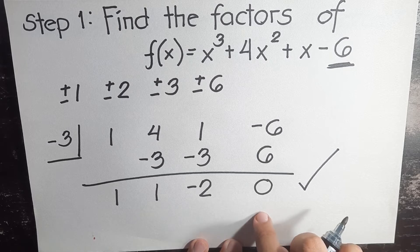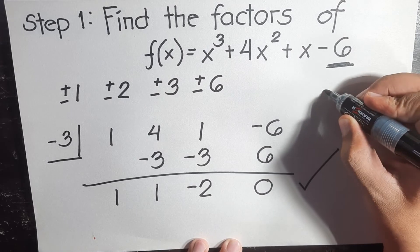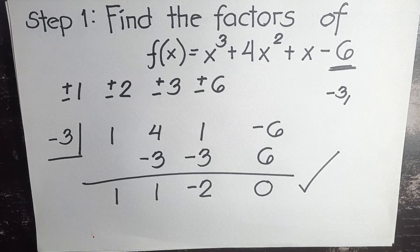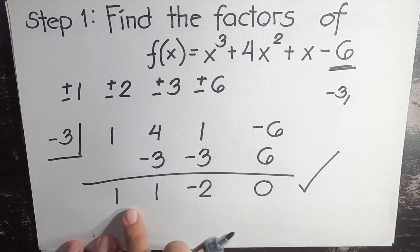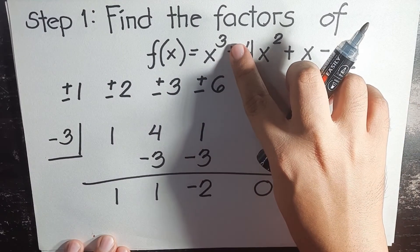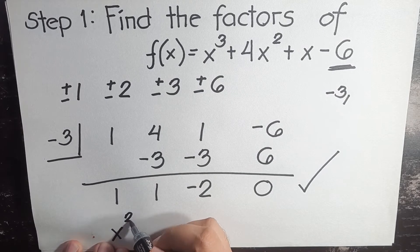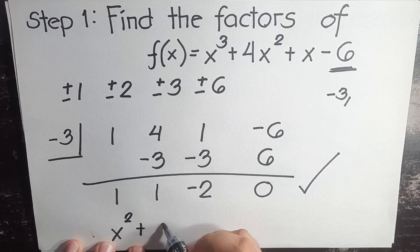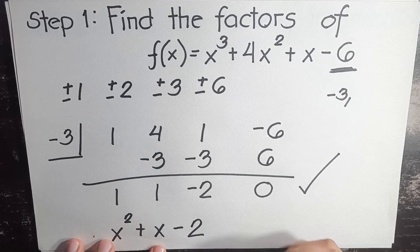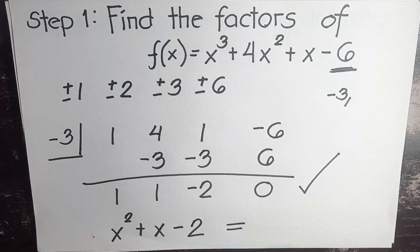Which means negative three is our first factor because we have a zero remainder. If the remainder is not zero, then it is not a factor. So our first factor is negative three. What are the other two? Let's convert this to polynomial form. This is in third degree, we divided by a first degree, so we start with the second degree. X² + X - 2.